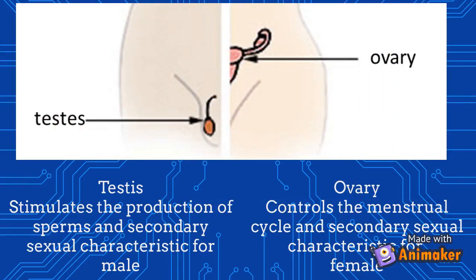For the next ones — testis and ovary. The testis secretes testosterone to control the maturity and development of the male sex organs. It also stimulates sperm production and the development of male secondary sexual characteristics like armpit hair, mustache, development of the larynx, and formation of muscles. Meanwhile, the ovaries secrete estrogen and progesterone to stimulate female secondary sexual characteristics like enlargement of the pelvis and development of the breasts. It also controls the menstrual cycle and stimulates development of the milk glands during pregnancy.